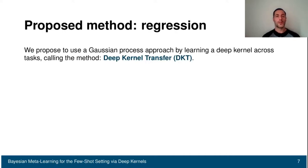Then we show how we can do this for the regression case. We exploit Gaussian processes, and we use a deep kernel that is shared across tasks. In practice, we take the kernel and we transfer it from one task to the other. Therefore, we call this method deep kernel transfer, or DKT.